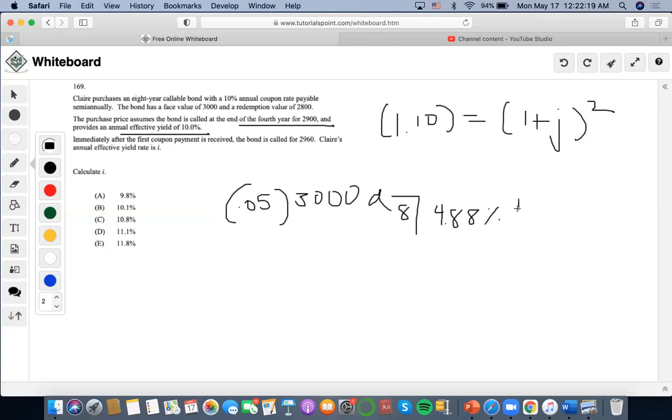Then it says that the purchase price assumes the bond is going to be called at the end of the fourth year, so the redemption is $2,900 back at the end of the eighth period. So now we want to calculate what this is. $3,000 times 0.05 is going to be $150, so we're going to get $150 as the payment, and the purchase price is $2,955.08.